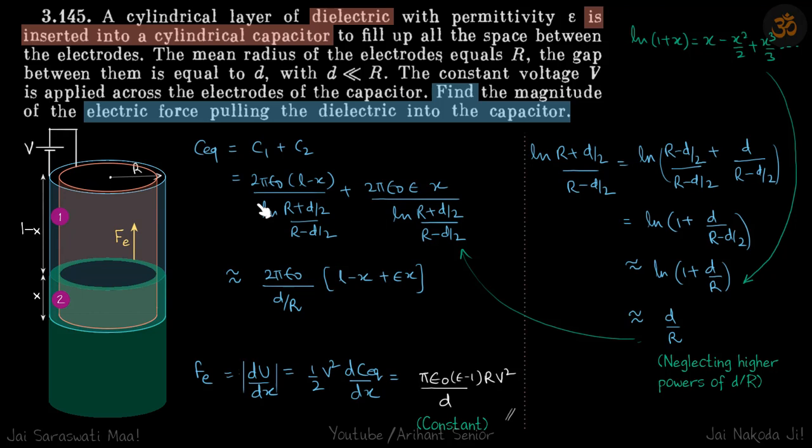It's our standard formula for cylindrical capacitor: 2πε₀L / ln(R2/R1). So this is 2πε₀(L - X) / ln((R + D/2)/(R - D/2)) because R is the mean radius.